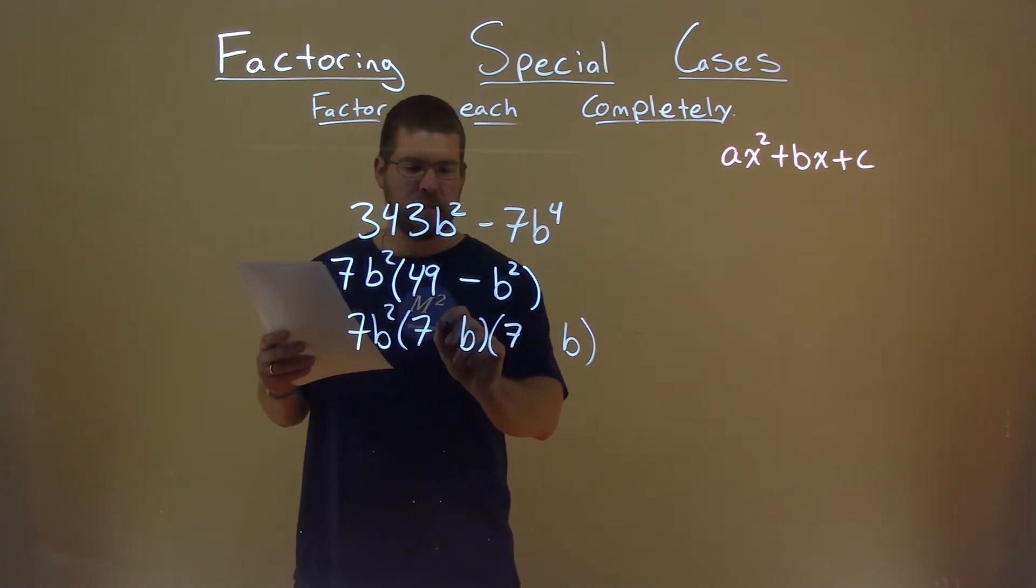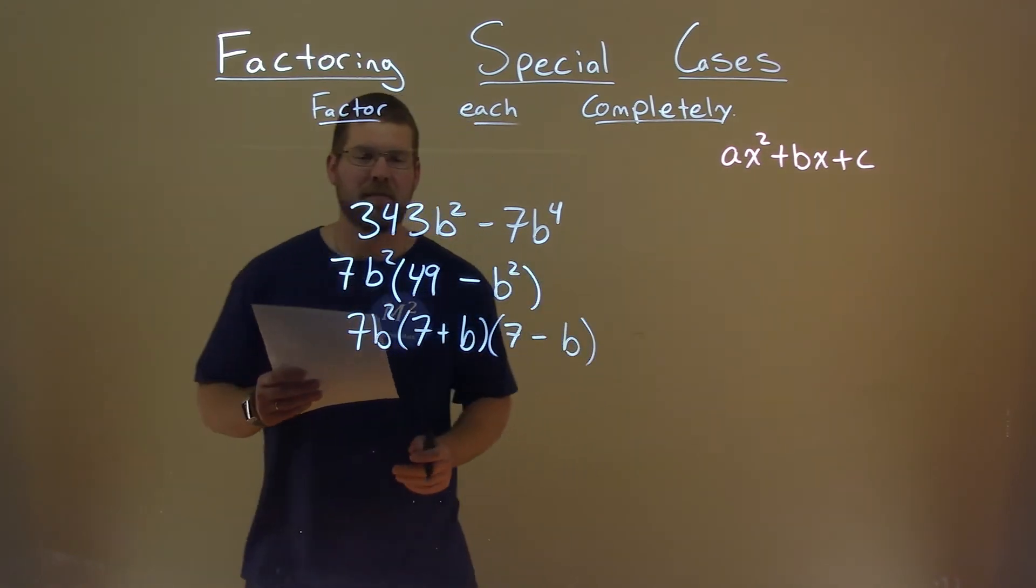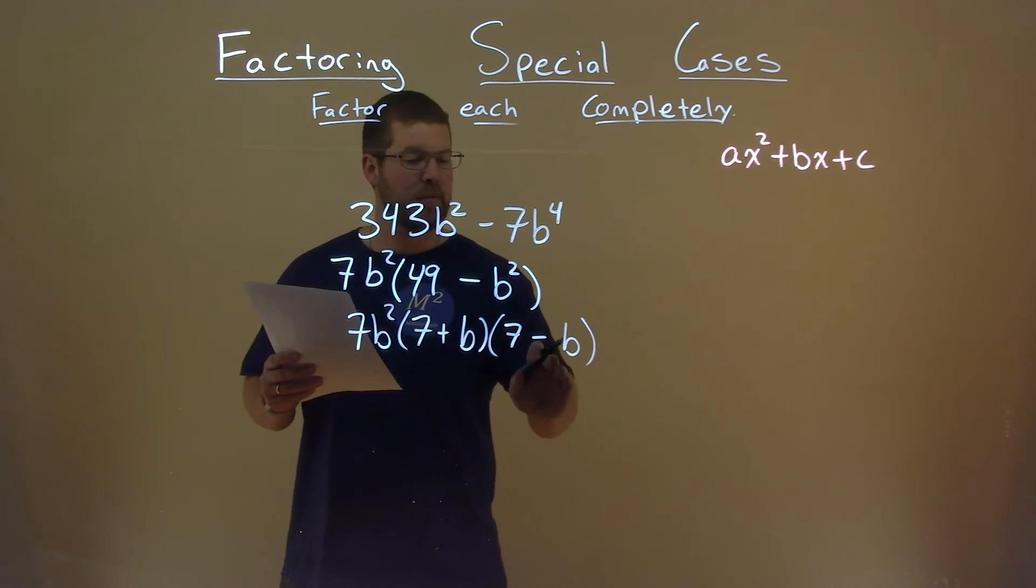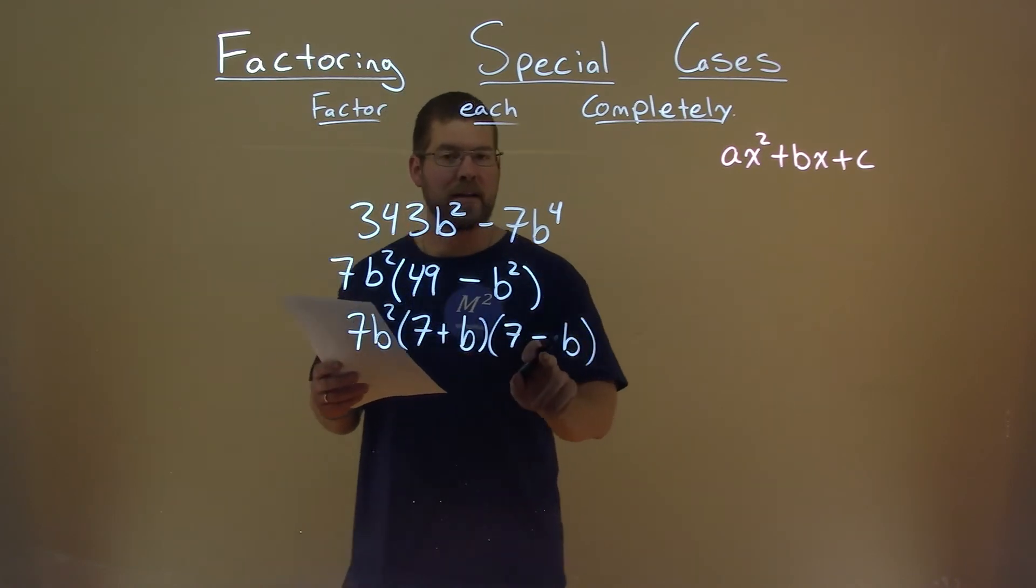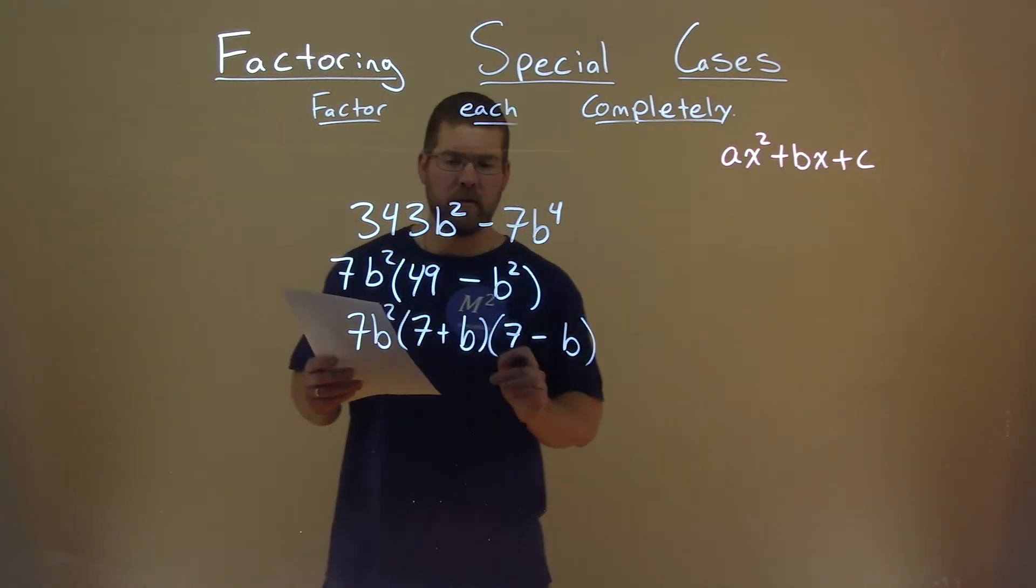Make 1 positive, 1 negative. And that actually, by having the same thing here, but 1 positive, 1 negative, will eliminate this b value here.